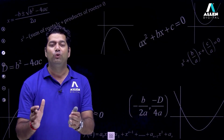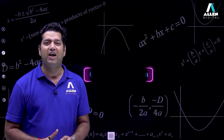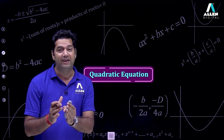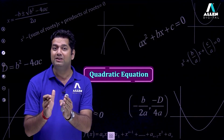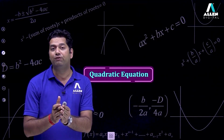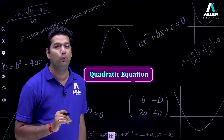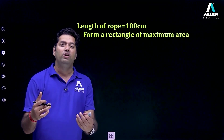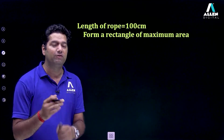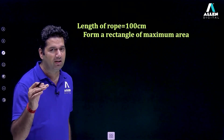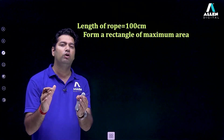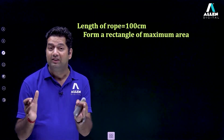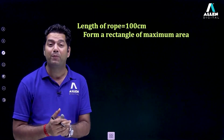Hello students, we are going to learn a very interesting chapter: quadratic equations. Quadratic means degree two, so the maximum power of the variable is equal to two, and equation means it holds an equality sign. To understand the importance of this, I am taking one example. The length of the rope is given as 100 centimeters and we have to form a rectangle of maximum area.